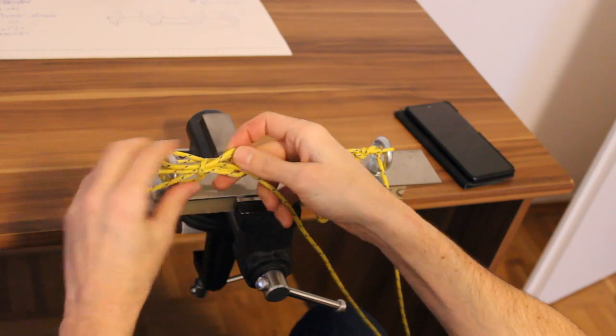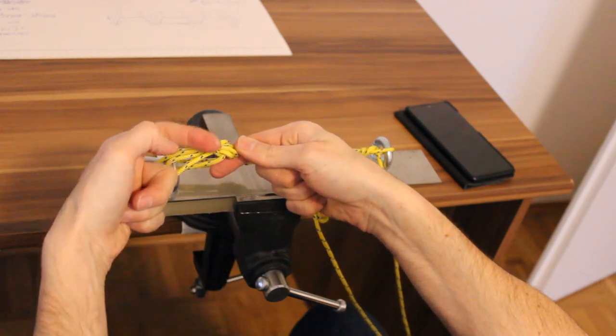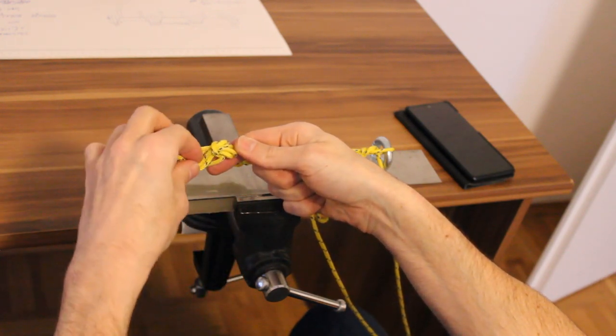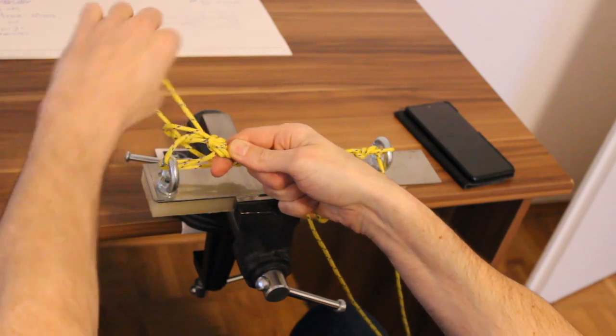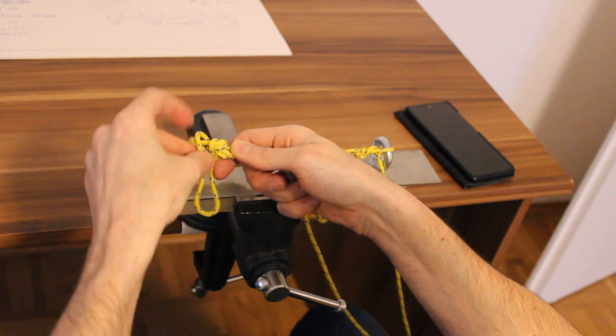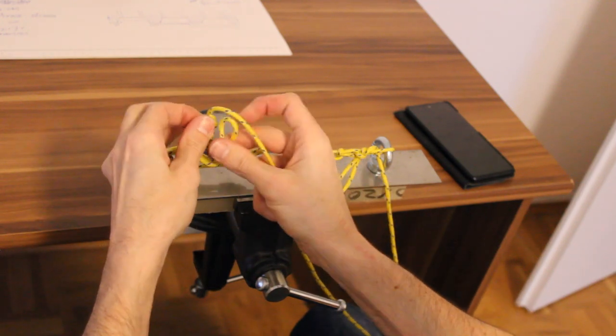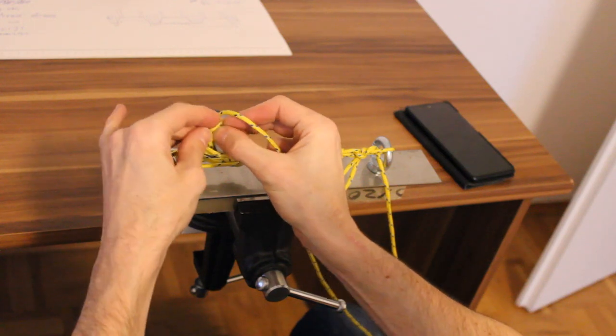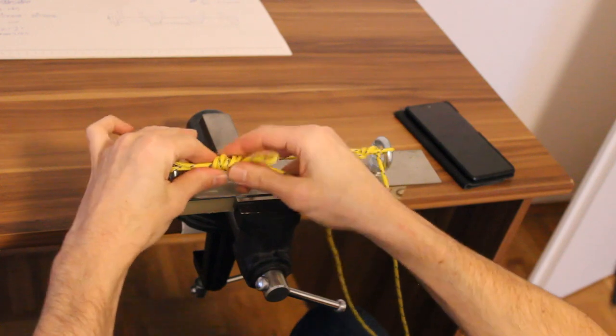And then, again, if you like, you can follow this line through again. Let's see which direction are we going this way around. Like that. And then through here, again to make this Yosemite finish for the bowline. Nice and snug.